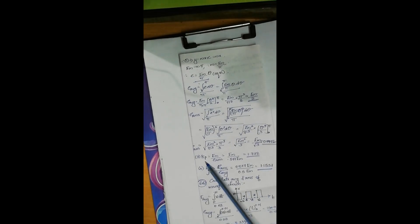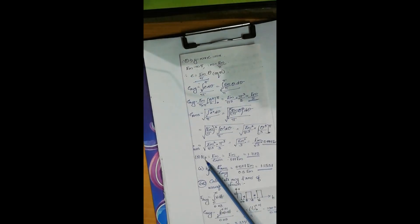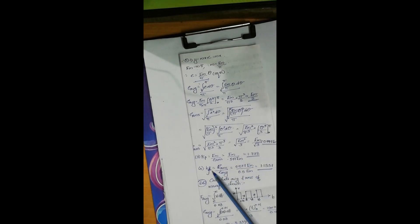Now we have to calculate the peak factor and the form factor. For peak factor, Em by e RMS, e RMS is calculated as Em by root 3.